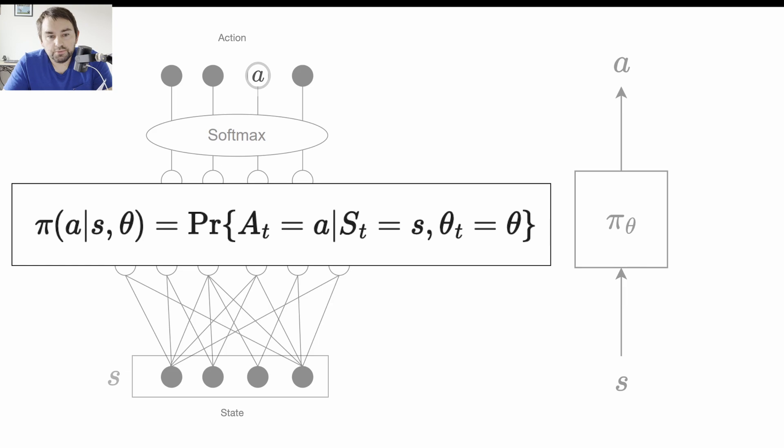So the reason I like to think of it this way is because when we then look at the definition in the book, it kind of intuitively makes more sense. The book describes this as the probability of taking action A at time T, given that environment is in state S. Also here θ is the policy's parameter vector. I think that this probability distribution over A, imagining it as a softmax, makes it easier. For me at least.